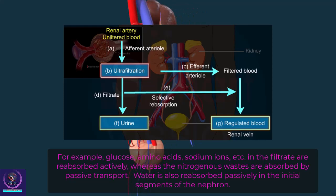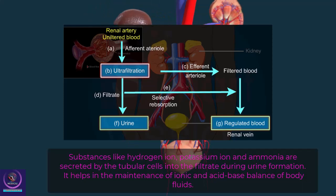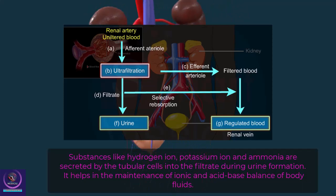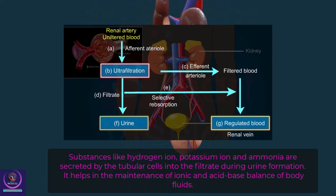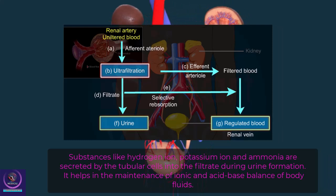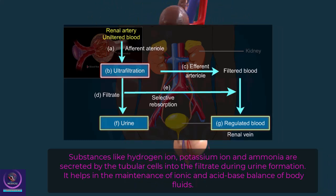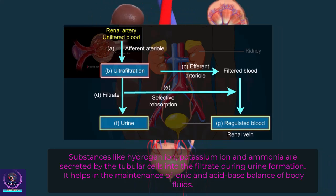Water is also reabsorbed passively in the initial segments of the nephron. Substances like hydrogen ions, potassium ions, and ammonia are secreted by the tubular cells into the filtrate during urine formation. This secretion helps in the maintenance of ionic and acid-base balance of body fluids.